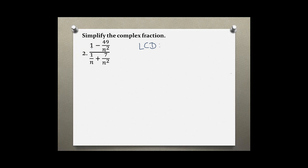In our case, there is no denominator on one term but we could put that over one — that's not necessary. We have an n squared, an n, and an n squared. So our different denominators are n squared and n. When we are only dealing with variables, we always choose the largest variable, the one with the highest degree — in this case two. So our least common denominator is n squared.